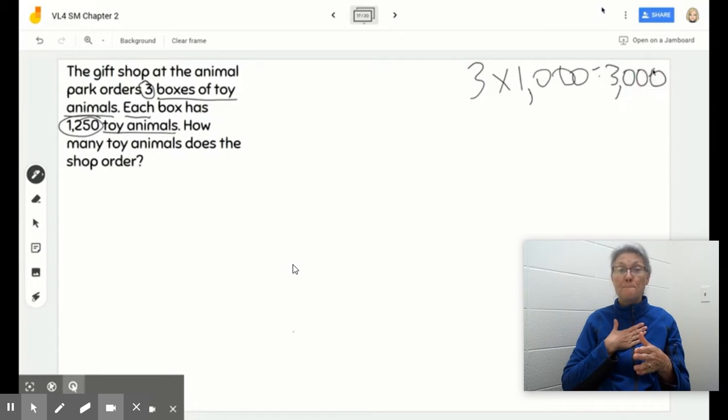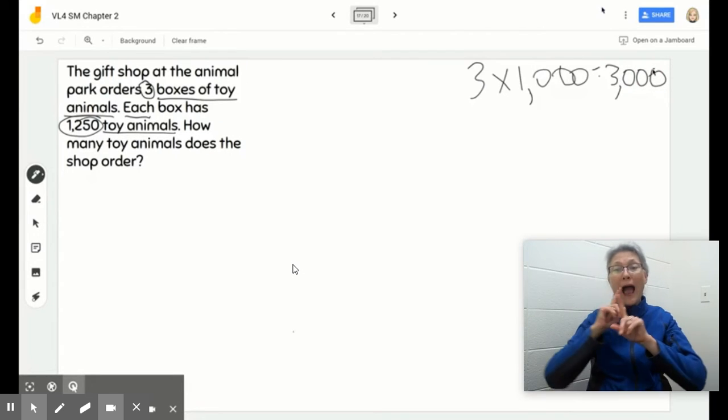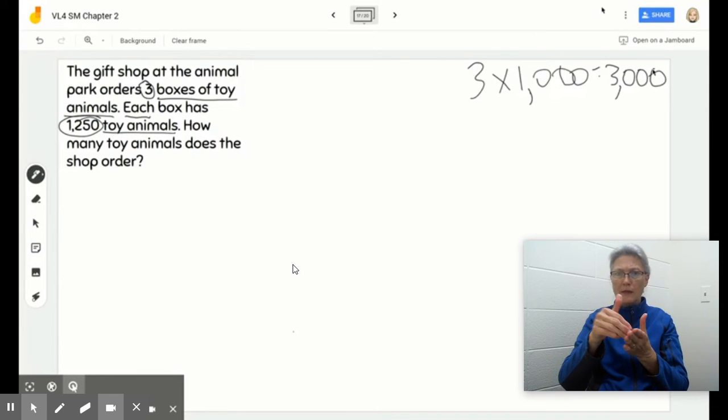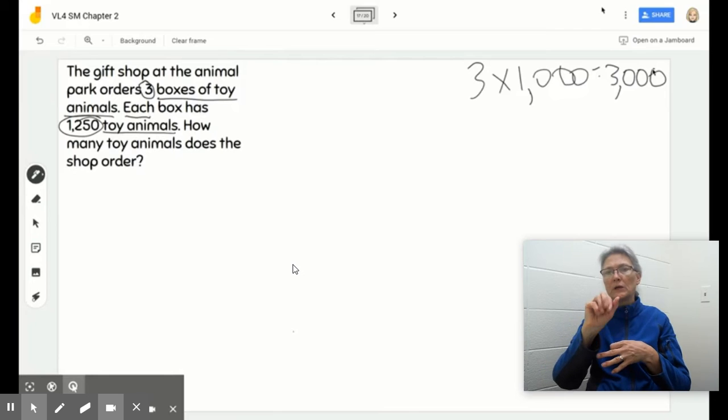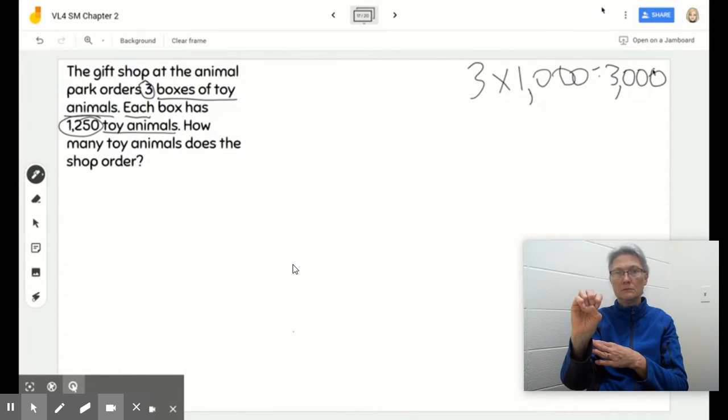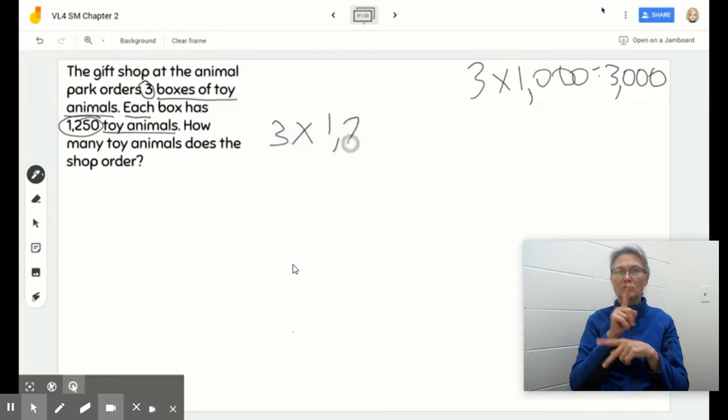So, my answer, my product, when I am finished here, should be relatively close to 3,000 in order for me to determine if it's reasonable. Alright, let's go ahead and let's get started. So, we need to multiply 3 times 1,250.